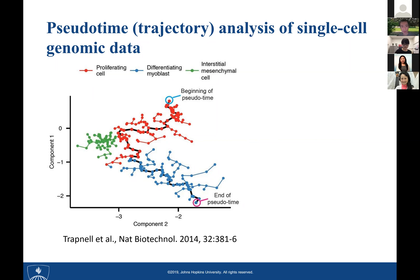The first pseudo-time analysis method was proposed in 2014 in a Nature Biotechnology paper. The authors developed a method called Monocle. In that method, they first project cells into a low-dimensional space, where each node represents a cell and the distance between two nodes represents similarity between cells. Monocle constructs a spanning tree to connect all cells and minimize total edge length. This minimal spanning tree can capture the biological process.